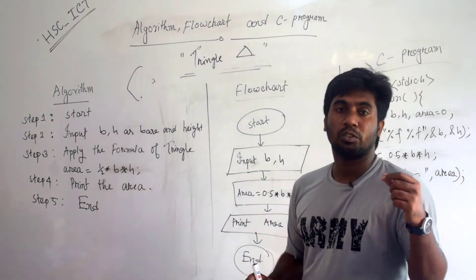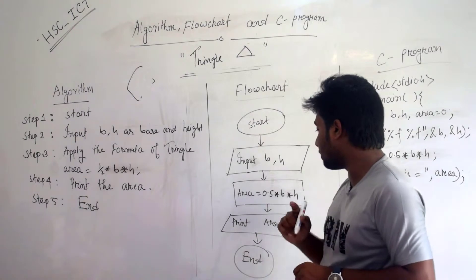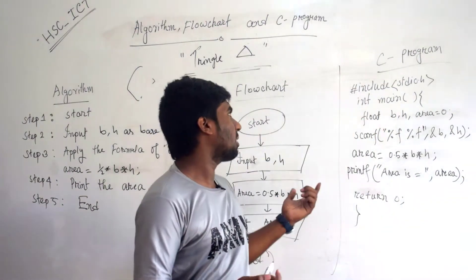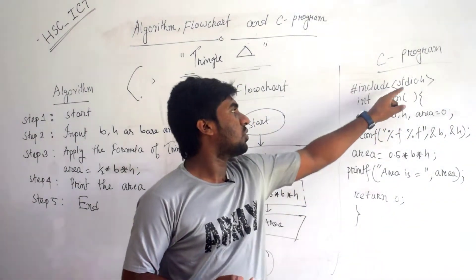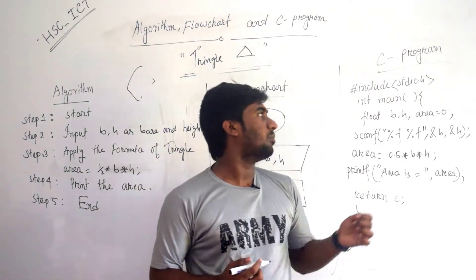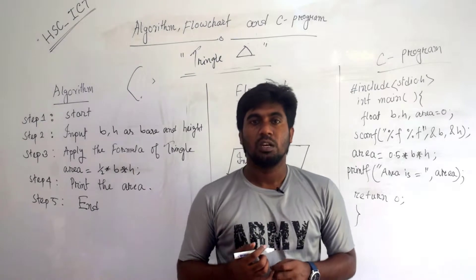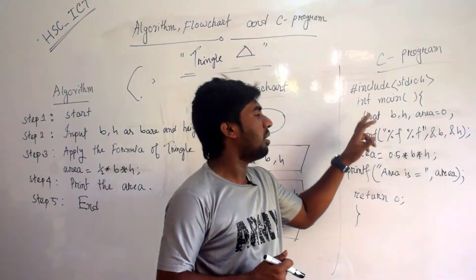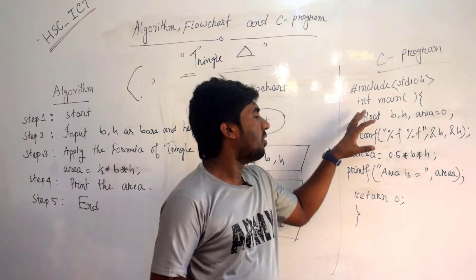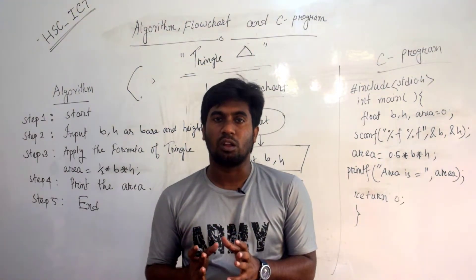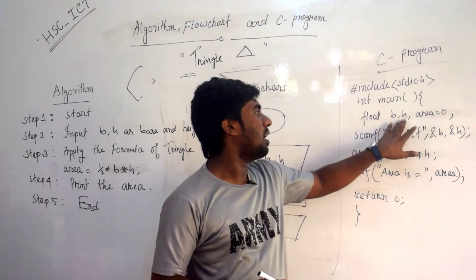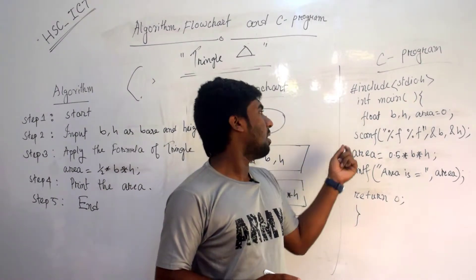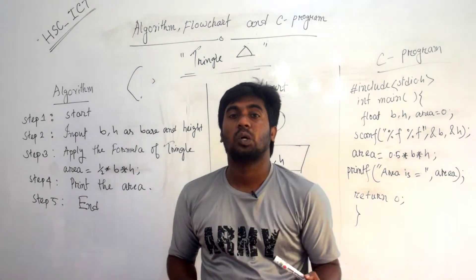Start your computer. Next is print. Next is C program — include the header file. C/C++ resources. Variable declaration: float area equal to 0.